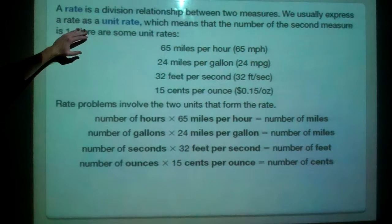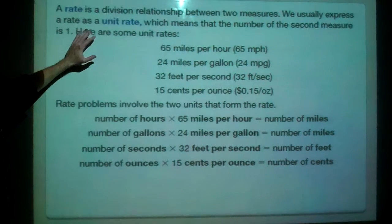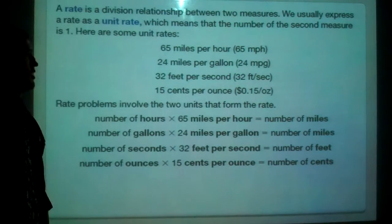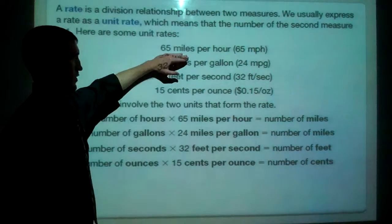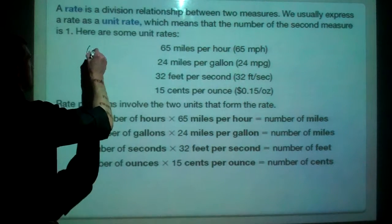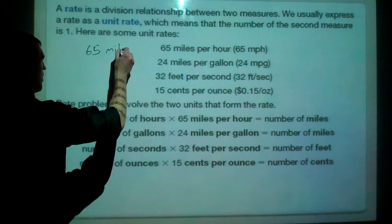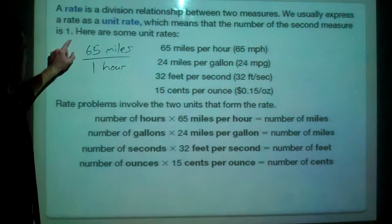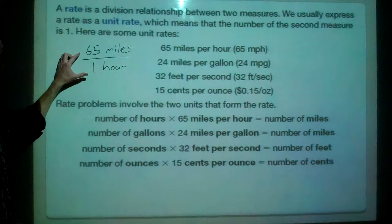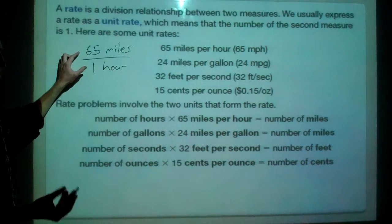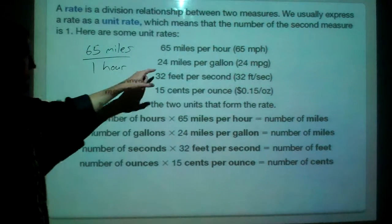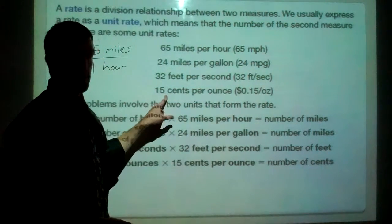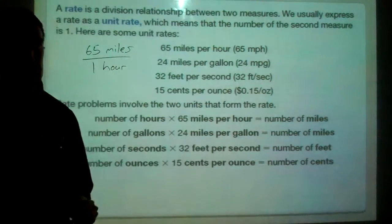Basically, a rate is a division relationship between two measures. We usually express it as a unit rate, which means the second measure is 1. So what they mean by that is if we say 65 miles per hour, that's the same thing as saying 65 miles in one hour. So the second measure is 1, and our first measure is 65, so in this case it's 65 miles per hour. So here it would be 24 miles per one gallon, 32 feet per one second, or 15 cents per one ounce.